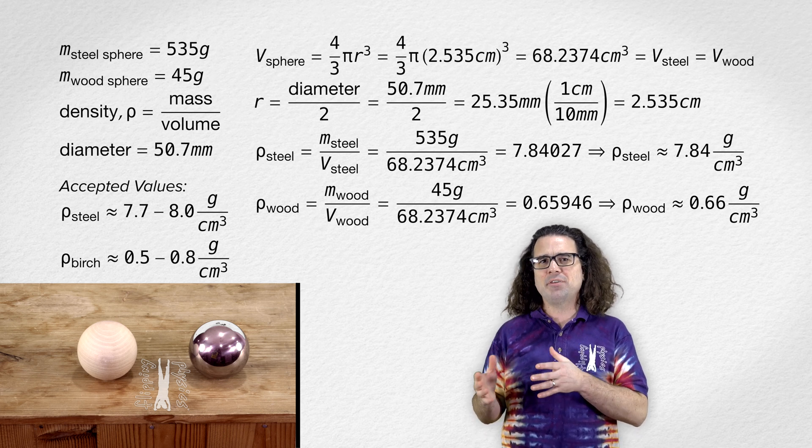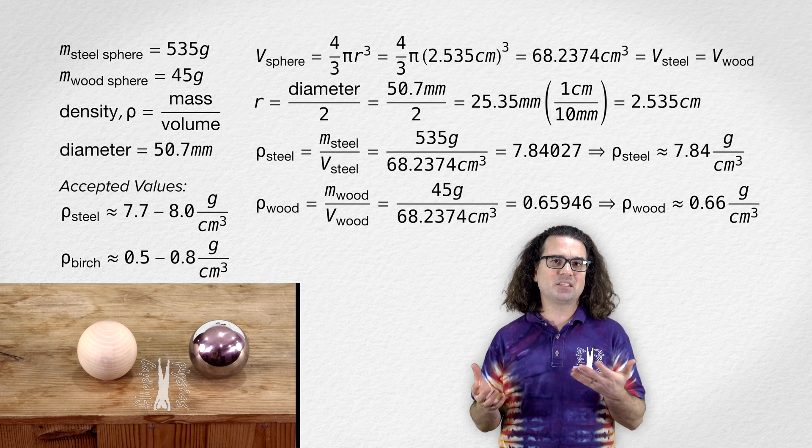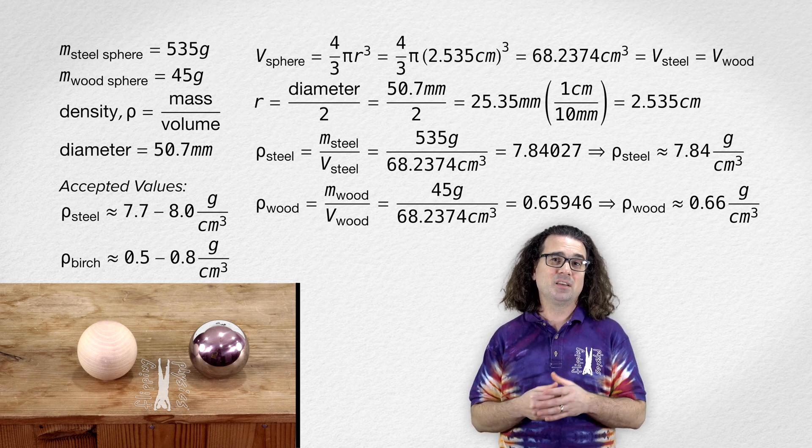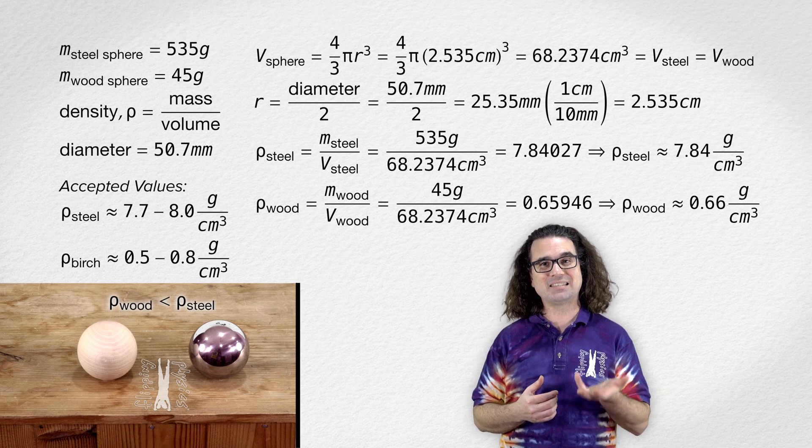So, yeah, both of the observed values we determined for density are within the range of the accepted values. And you can clearly see that the density of steel is larger than the density of wood.